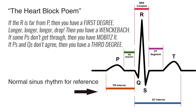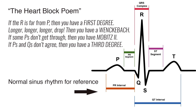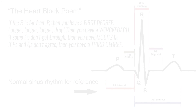Here's a simple poem to help you remember the types of AV heart blocks: 'If the R is far from P, then you have a first degree. Longer, longer, longer drop — then you have a Wenckebach. If some P's don't get through, then you have Mobitz 2. If P's and Q's don't agree, then you have a third degree.'